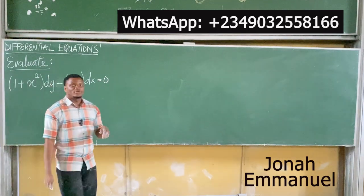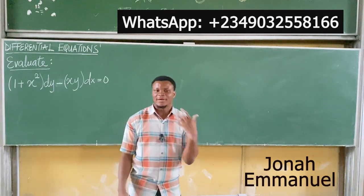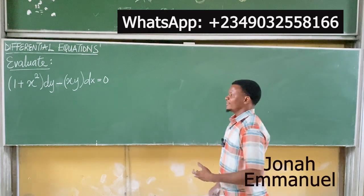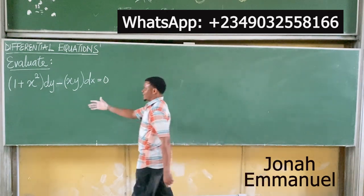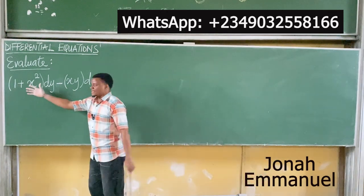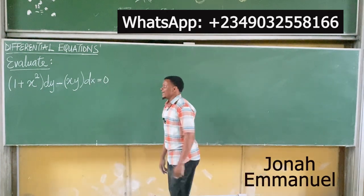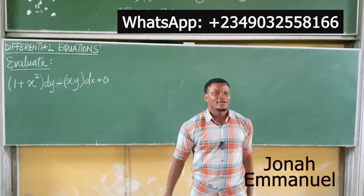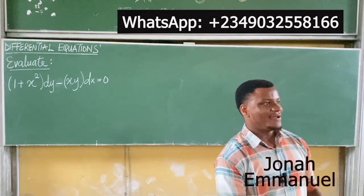Another question on the variable separable method. You're asked to evaluate: (1 + x²)dy − xy dx = 0. How do you solve this?